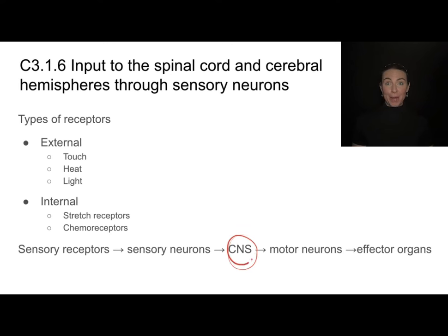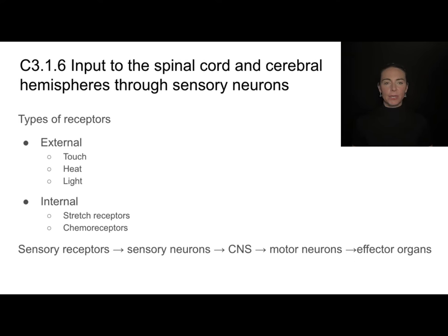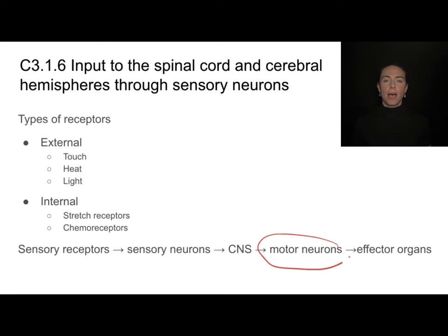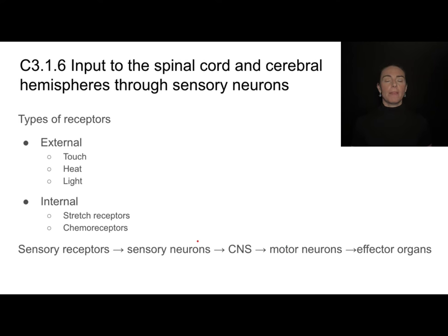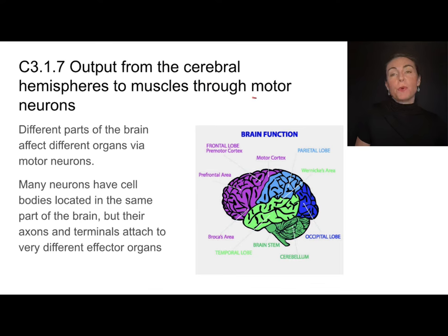It's the job of the brain and spinal cord to process sensory information and determine if some kind of action is required. If an action is required, the brain or spinal cord sends a message along a motor neuron to an effector organ — that could be a muscle or a gland. All nervous messages are one-way signals, so we need different neurons to carry information away from the central nervous system than those carrying information toward it.